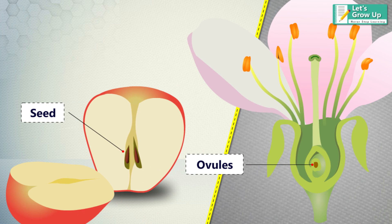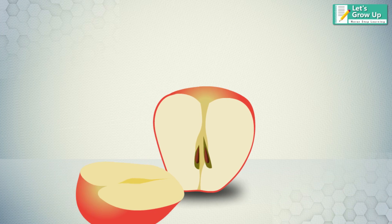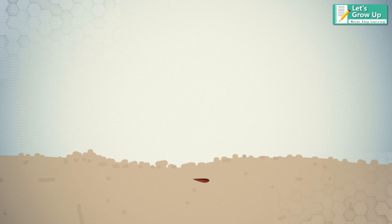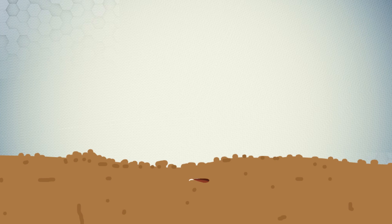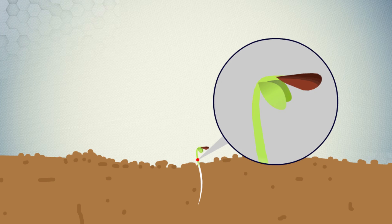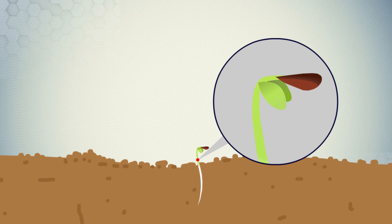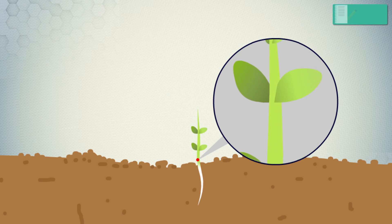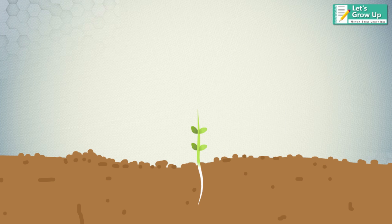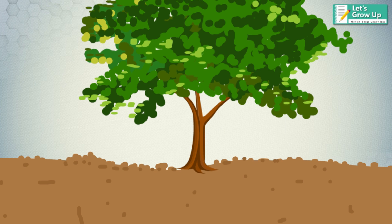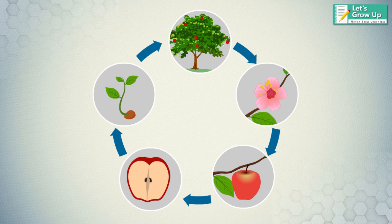After planting a seed in the soil, it begins to grow into a small plant called a sprout. Sprouting is the first stage for a small plant. After a few days it grows up, and over time the young plant will grow into an adult plant. In this way, a tree completes its life cycle.